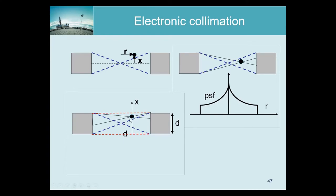But as soon as the source passes the dashed line, both detectors become a bottleneck — one is a bottleneck for the lower line, and the other becomes a bottleneck for the upper line. Moving the point source from the dashed line to the red line, the sensitivity decreases linearly.